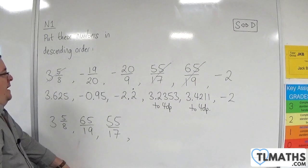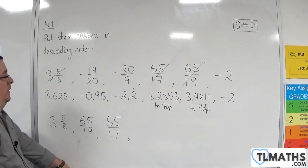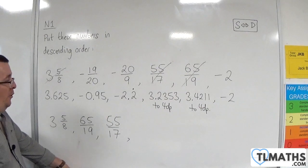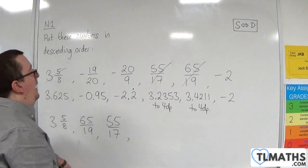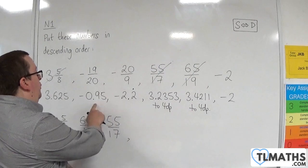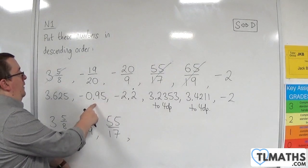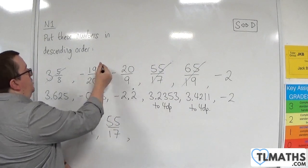Right, now we're going to the negatives. So we want the most positive of those, which is the minus 0.95. So minus 19 over 20 is next.